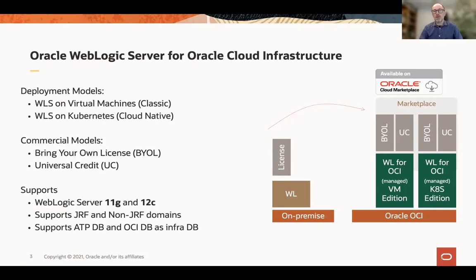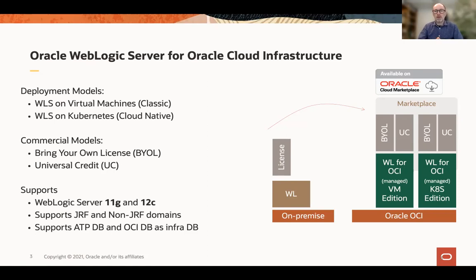The first model is bring your own license, meaning that you already have licenses used on-premise and can take those existing licenses and run them in the cloud. On the other hand, we also offer the option of pay-as-you-go using the concept of universal credits. You basically consume your license on a per-hour, per-CPU basis, which gives you a lot of flexibility in scaling up and scaling down and adjusting your costs to the actual need of your application.